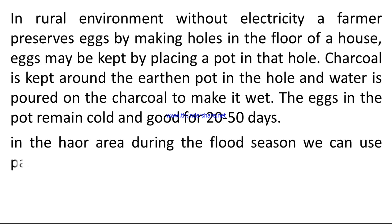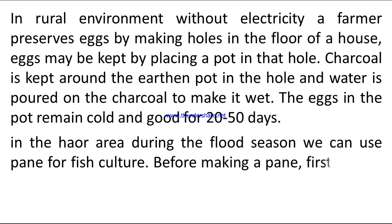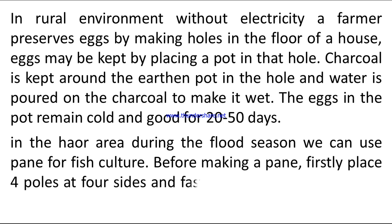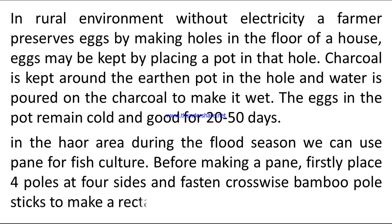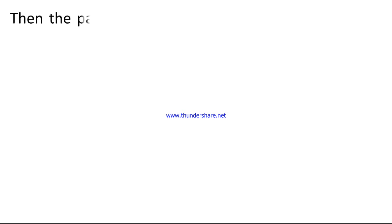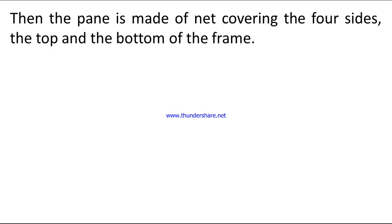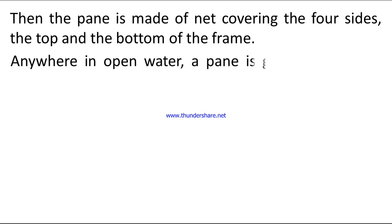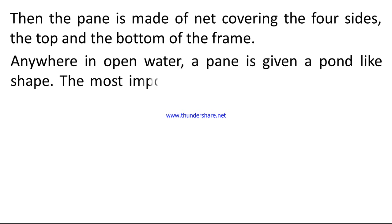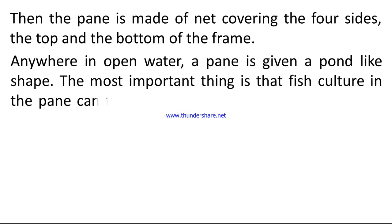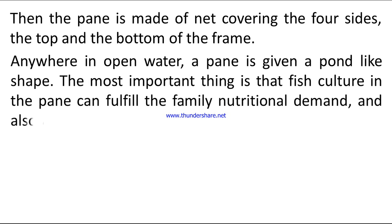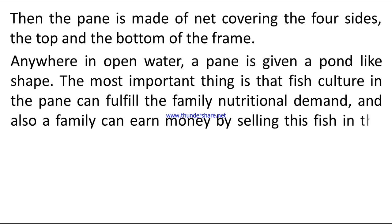Answer 6: In the haor area during the flood season, we can use a pen for fish culture. To make a pen, first place four poles at four sides and fasten crosswise bamboo pole sticks to make a rectangular shape. Then the pen is made of net covering the four sides, the top, and the bottom of the frame. Anywhere in open water, a pen is given a pond-like shape. Fish culture in the pen can fulfill the family's nutritional demand and also earn money by selling fish in the market.